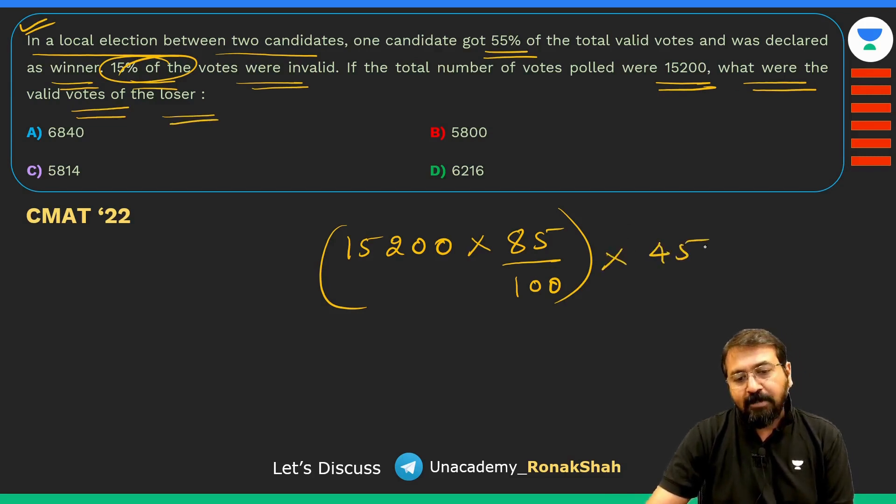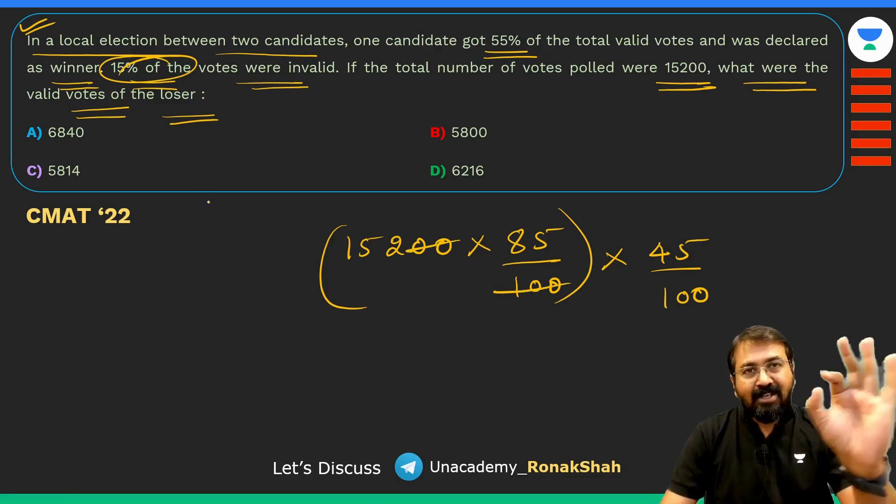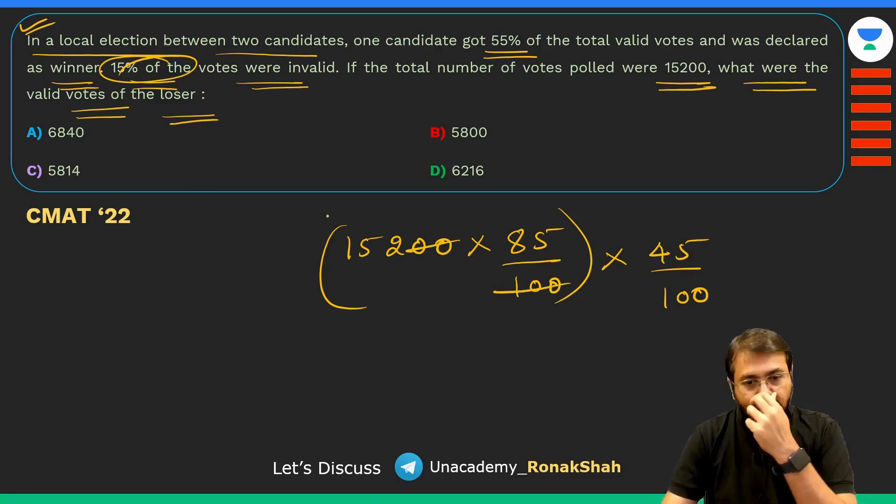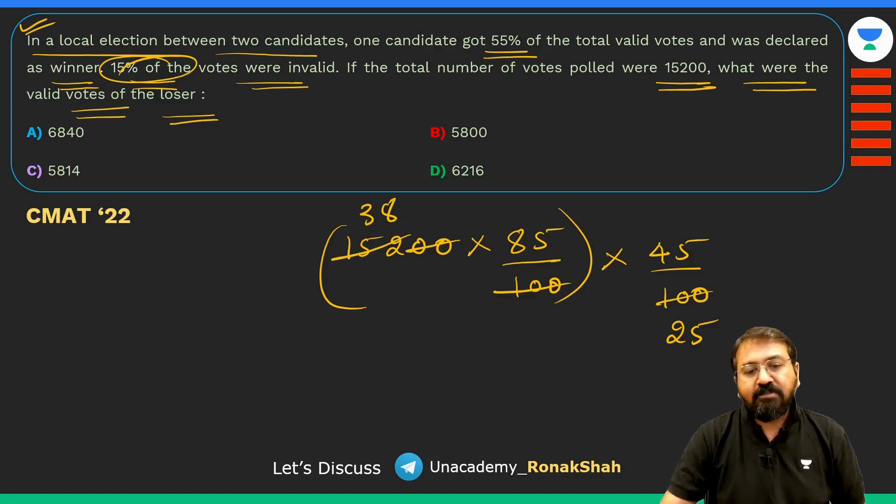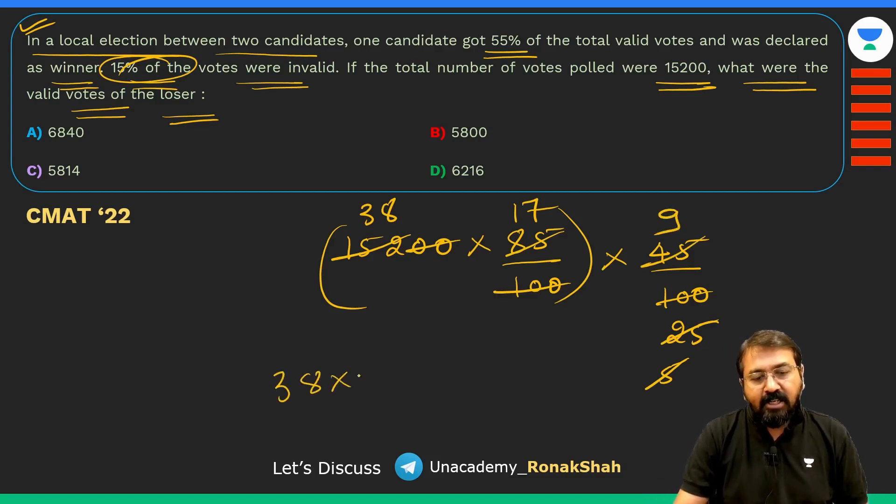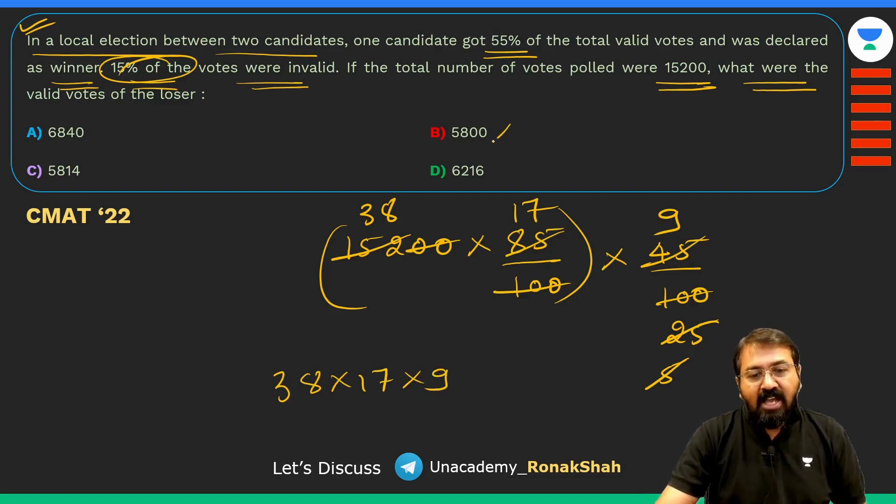What were the valid votes of the loser? Loser got 45% of these votes, so 45 by 100. This will become very simple question in terms of solution because here we are given exact values. I'll show you how to solve this question. Just cancel the zeros, this is 20 by 100, or I can say 25 by 100 and 38 by 152. Similarly 5 by 25, 17 by 9. Ultimately my answer will be 38 into 17 into 9.